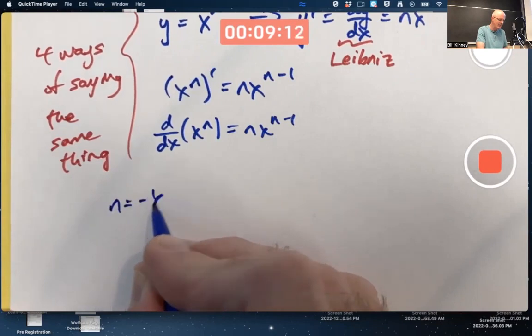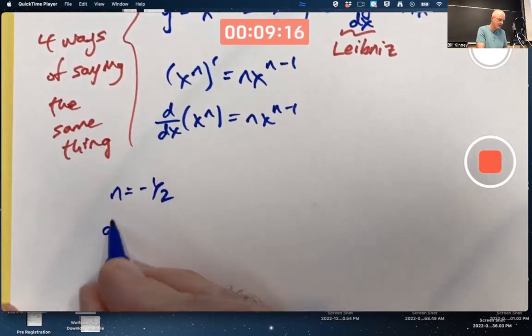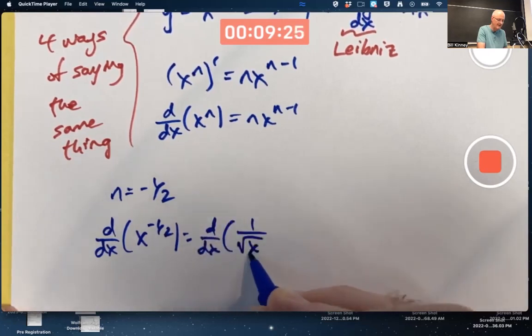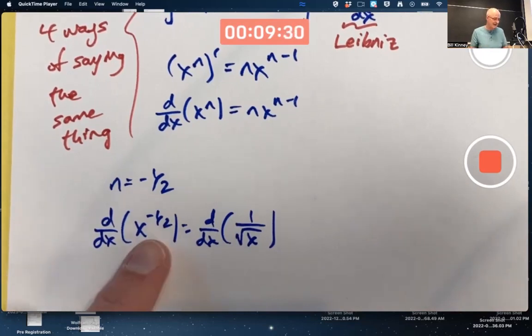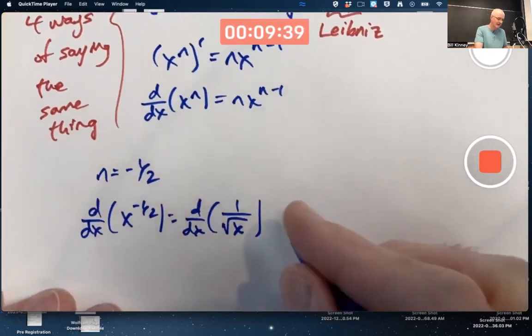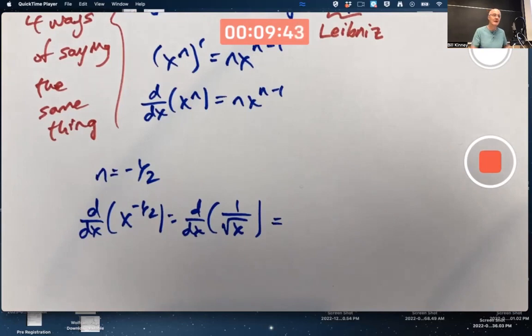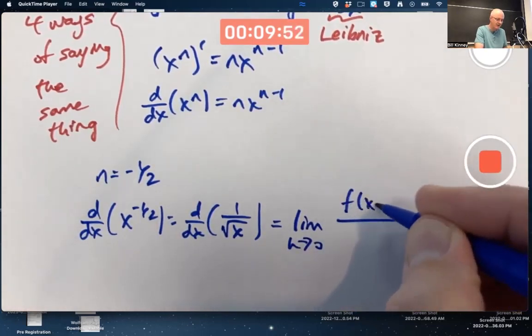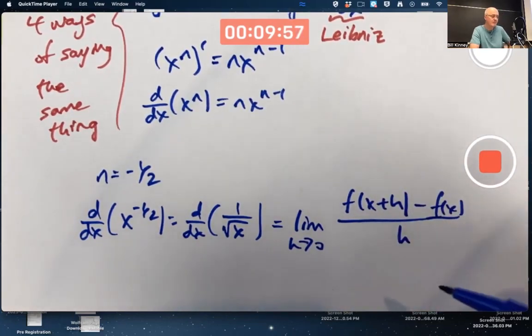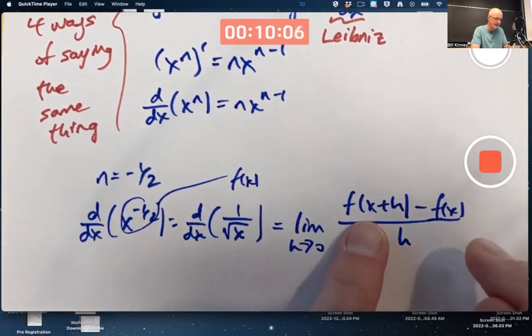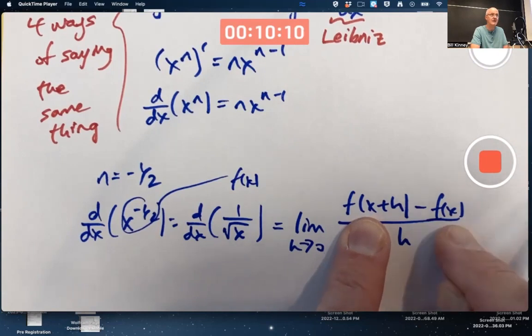Let's do another example. Let's do the case where n = -1/2. What's the derivative with respect to x of x^(-1/2), which is the same as the derivative of 1/√x? Powers like this are not magical things. By definition, they are related to things like this, in this case, the square root. I'm doing this at an arbitrary value of x.